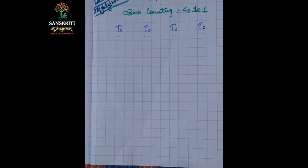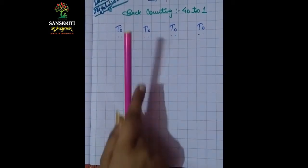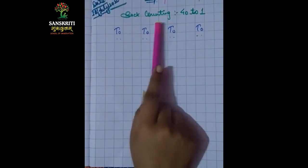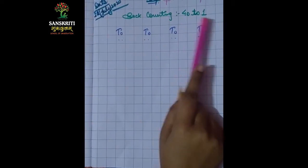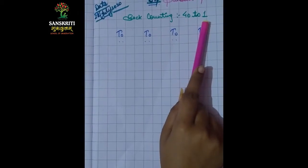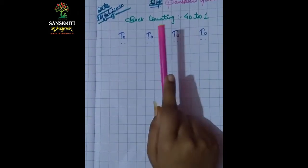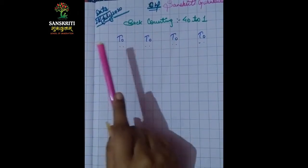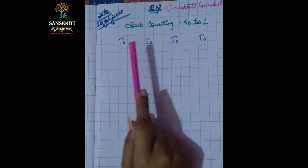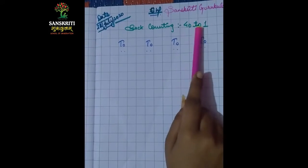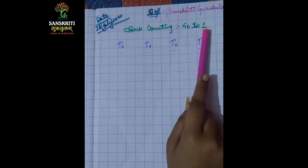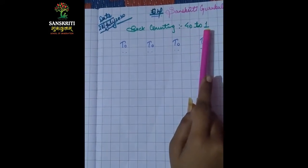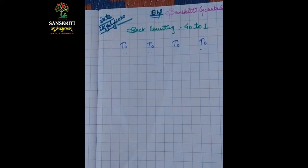Now I am going to take up back counting 40 to 1. Last video I have done 30 to 1 back counting. Now we will do 40 to 1. Okay, let's start.